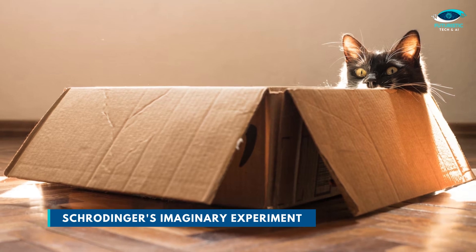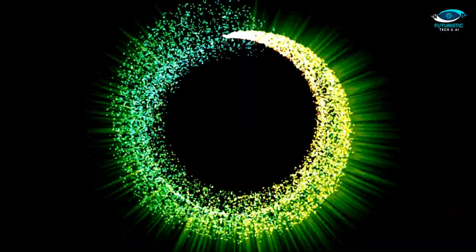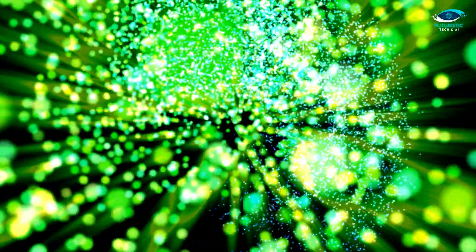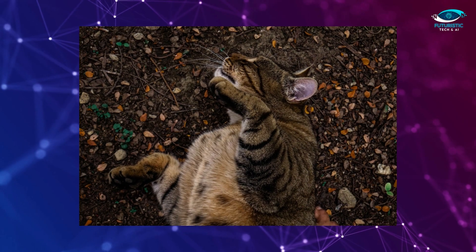In Schrodinger's imaginary experiment, you place a cat in a box with a tiny bit of radioactive substance. When the radioactive substance decays, it triggers a Geiger counter, which causes a poison or explosion to be released that kills the cat.